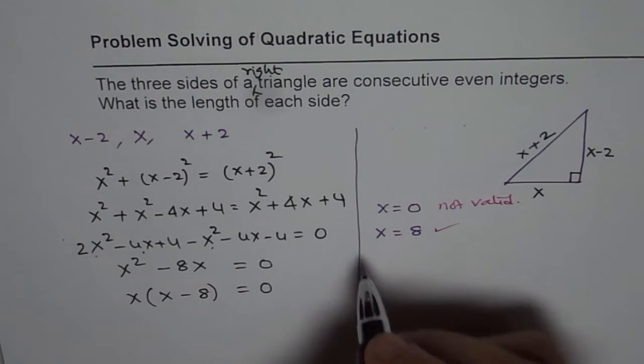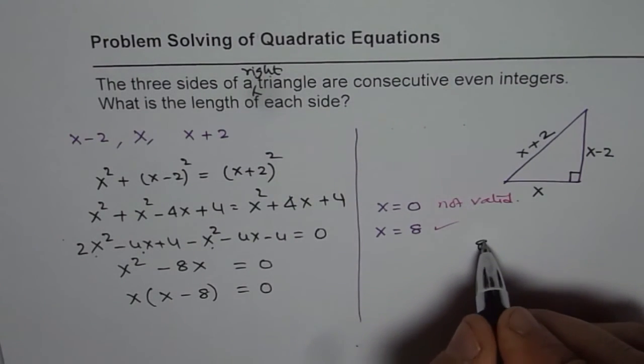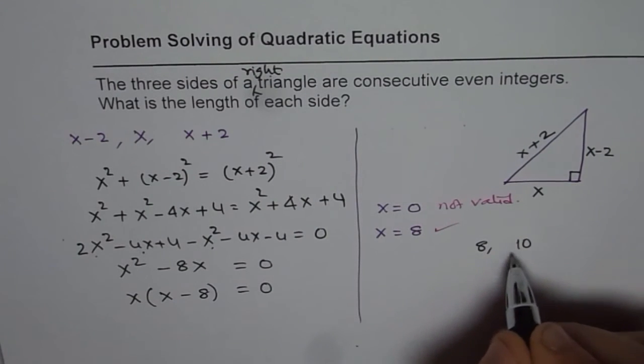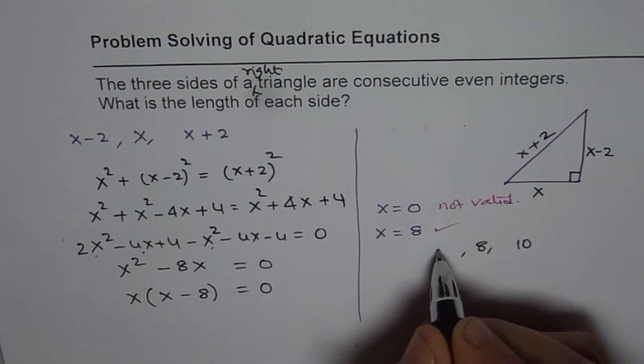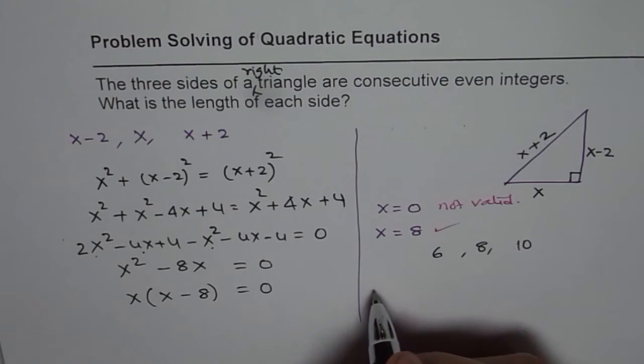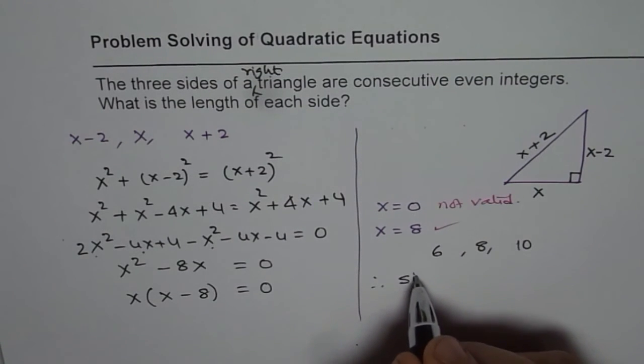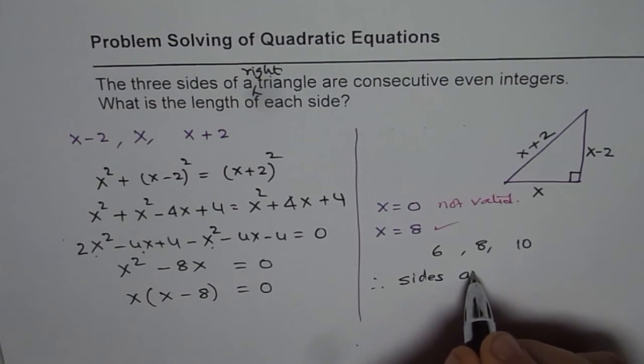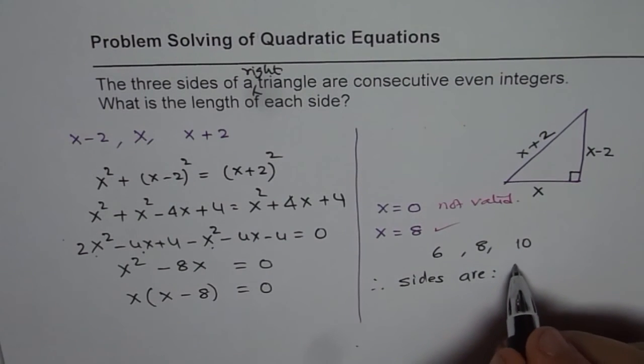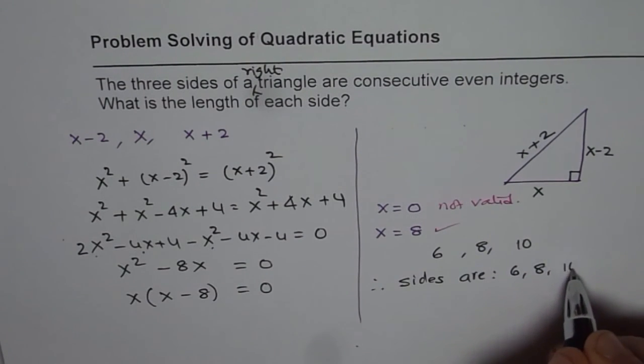So if x is 8, then the numbers are 8, 8 plus 2 is 10, and 8 minus 2 is 6. So we say, therefore, the sides are 6, 8, and 10 units.